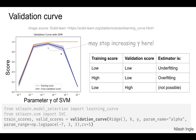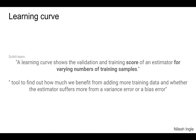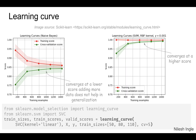Moving on, let's look at learning curves. Learning curves help us find out how the training and validation scores are doing — how the model is performing — by looking at adding more data or more training samples to the training process. We have two plots: the one on the left is Naive Bayes and on the right is Support Vector Machine.